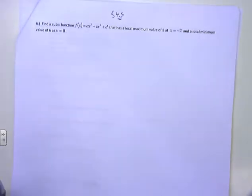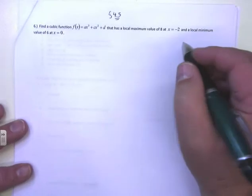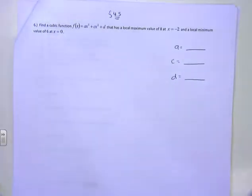Last couple of questions from section 4.5. Here's your first one: a cubic function f(x) = ax³ + cx² + d has a local maximum value of 8 when x = -2, and a local minimum value of 6 at x = 0. Your mission is to tell me what a is, what c is, and what d is — this is right off WebWork. You've got to use detective work to figure this thing out.